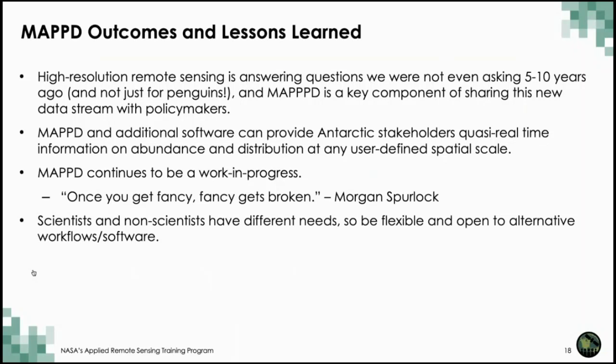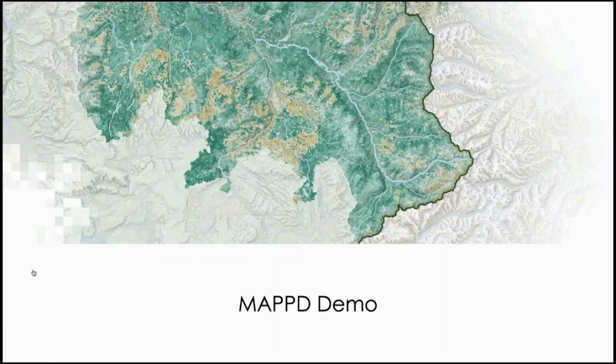MAPPED has shown that through the use of high-resolution remote sensing data we can change the narrative of Earth science applications and species distribution models, allowing scientists to ask new questions. The tool can inform stakeholders about penguin abundance and distribution and continues to be a work in progress — the team continually updates and modifies it. Tailoring tools for your specific audience is really important, and the team found that being open and flexible is key when working with stakeholders. They also created an R package that interfaces with the web interface to meet the needs of the user.